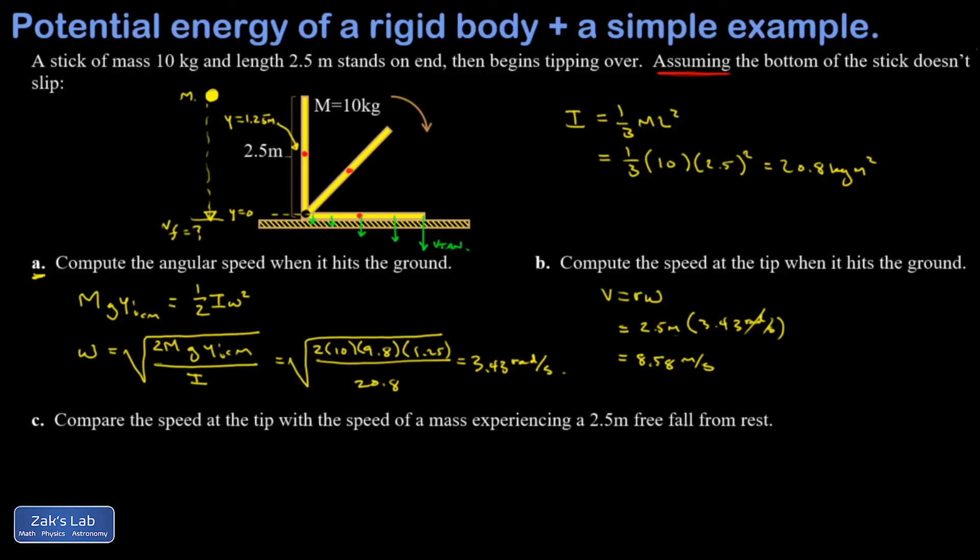So part C says compare the speed at the tip with the speed of a mass experiencing a 2.5 meter free fall from rest. And your intuition might tell you these two things should be the same. And they actually turn out not to be. And the way they're not the same is actually pretty surprising. So let's find the impact speed of this mass.